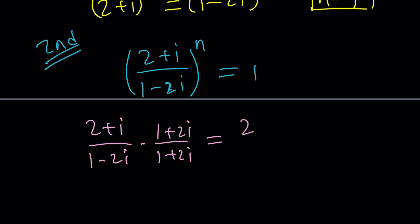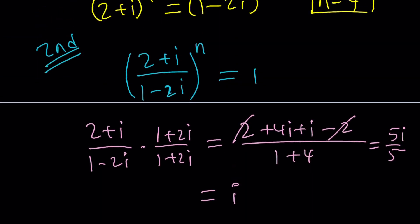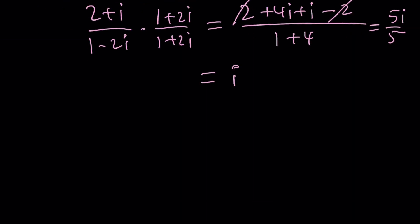If you distribute the top, you're going to get 2 plus 4i plus i minus 2 from 2i squared, divided by 1 plus 4, which is 5. You knew that. 2's cancel out. We get 5i over 5. Uh-oh. This gives us i.